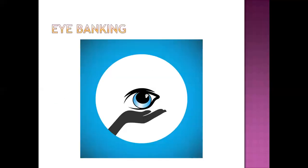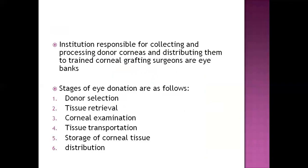Eye banking involves the storage of corneal donations for transplantation. A cornea donated by one person is stored in an eye bank and then provided to another person — the eye bank is a collector and distributor of corneas. Donated eyes are provided to corneal grafting surgeons through the eye bank. The stages of eye donation are donor selection, tissue retrieval, corneal examination, tissue transportation, storage, and distribution.